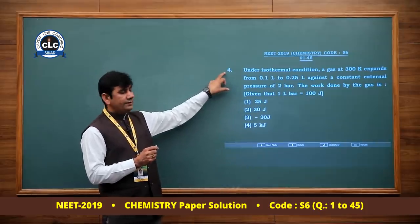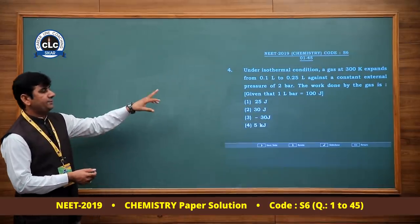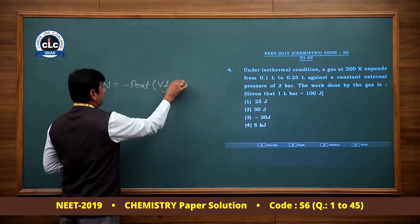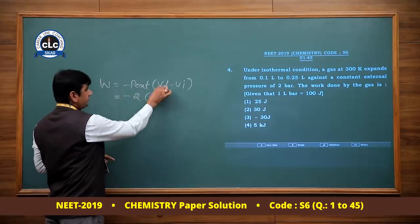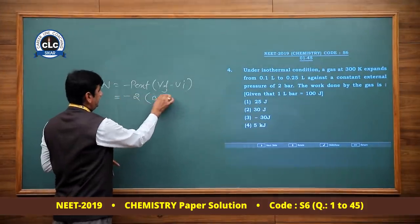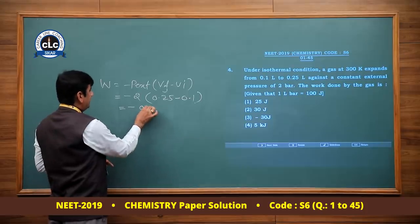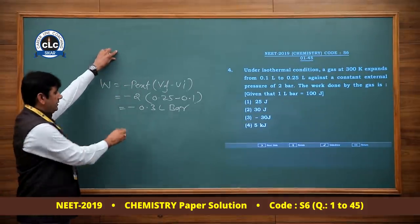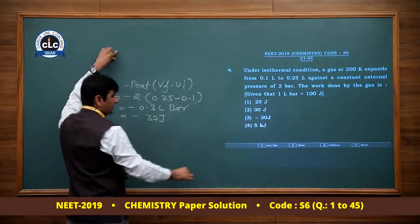Question number 4: Under isothermal condition, gas at 300 Kelvin expands from 0.1 liter to 0.25 liter against a constant external pressure of 2 bar. The work done by the gas: W = −P_external × ΔV = −2 × (0.25 − 0.1) = −0.3 liter bar. Given 1 liter bar = 100 Joule, so W = −30 Joule. Option 3 is correct.